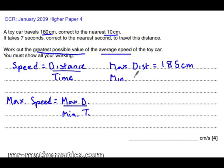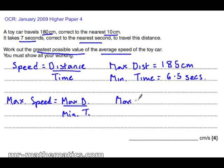The minimum time: it has been rounded to 7 seconds to the nearest second, so the minimum time would be 6.5 seconds. Any lower than that and it would be rounded to 6 seconds. So the maximum speed would be 185cm divided by the minimum time of 6.5 seconds.